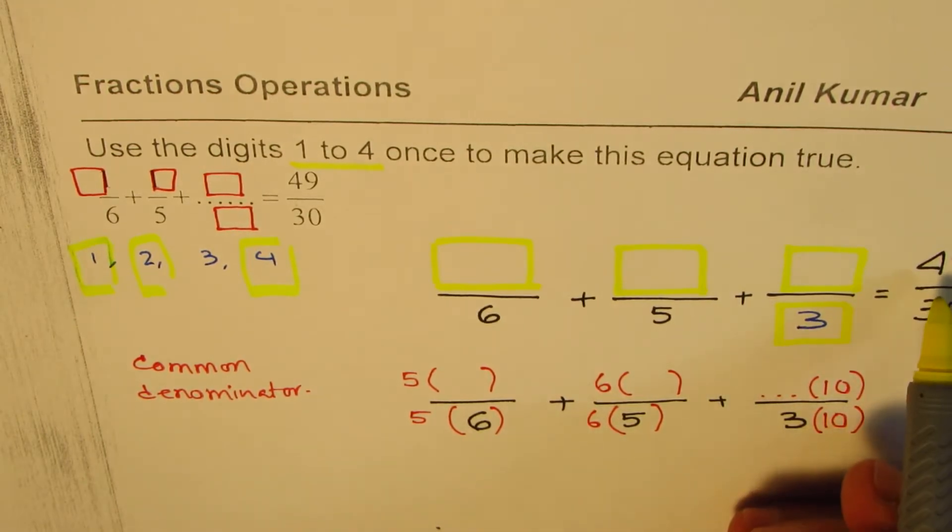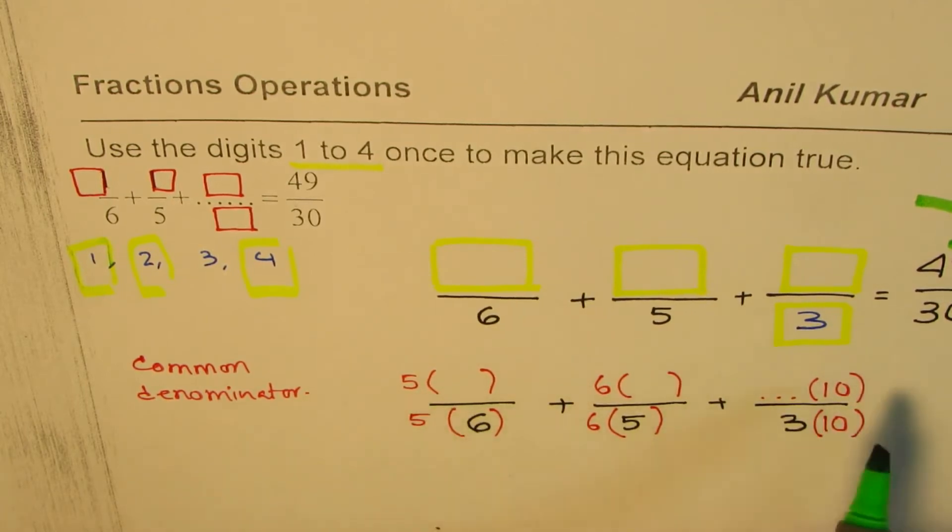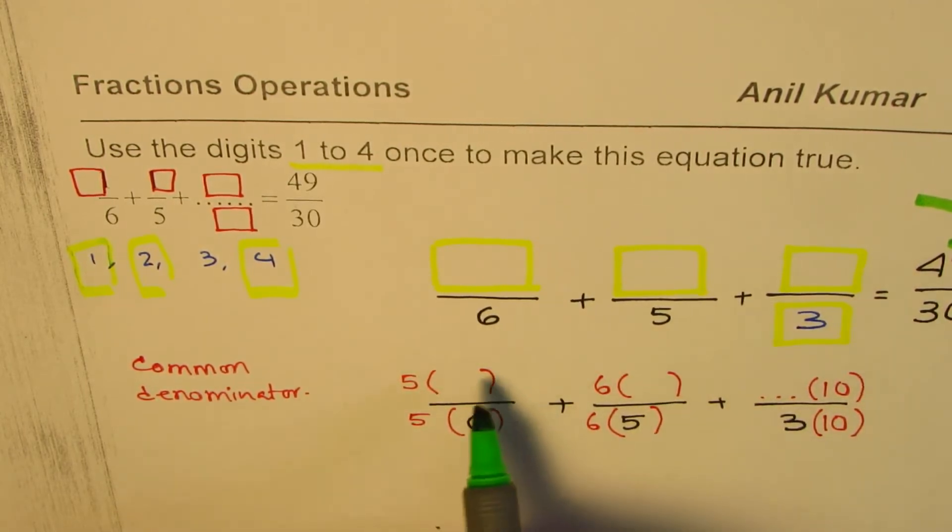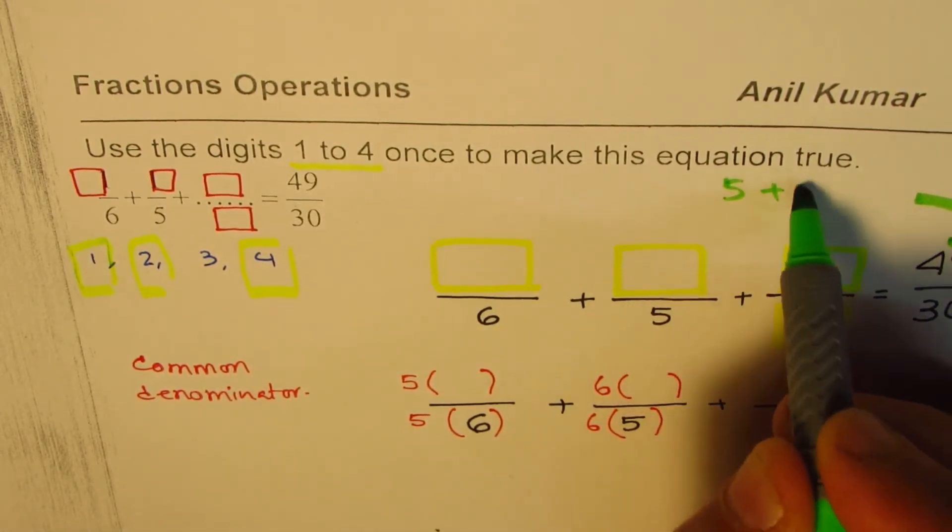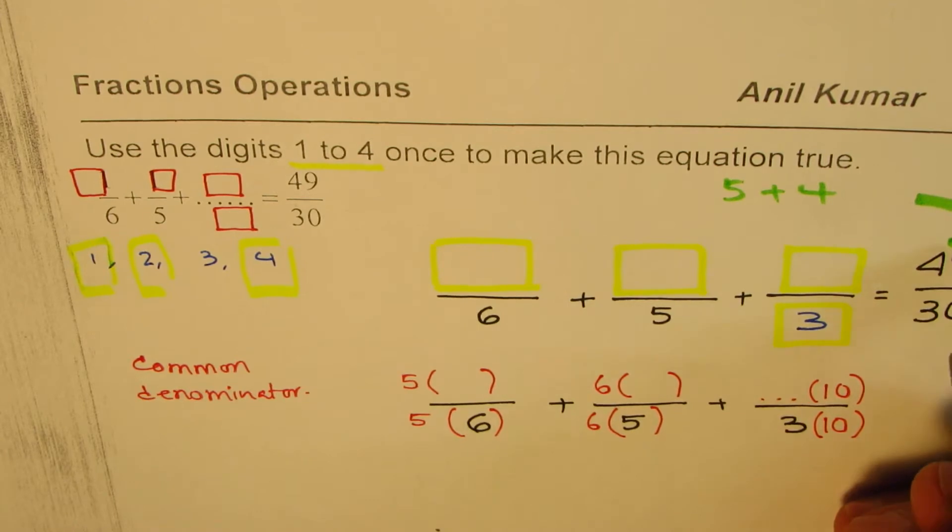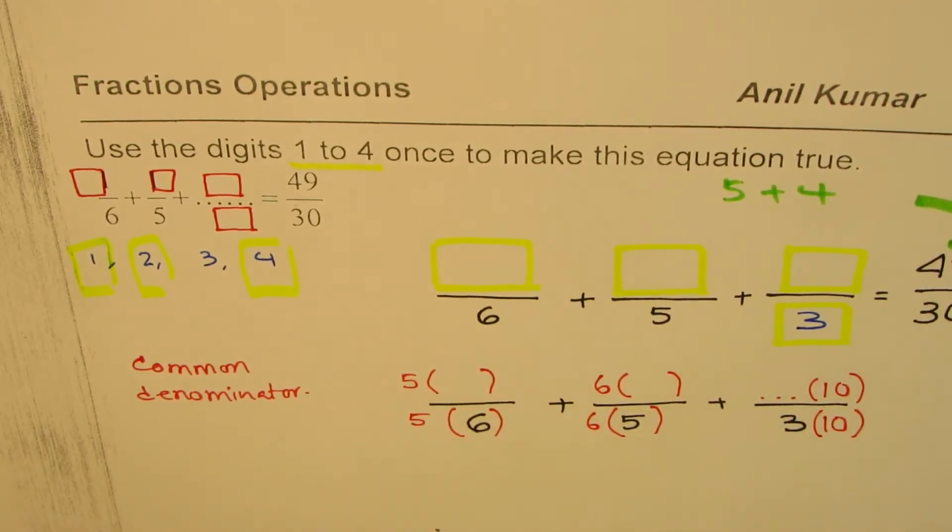Now it is simpler to understand what three numbers, which are now for us 1, 2, and 4, how should they be placed here so that we get 49. Now look at this part, 9. Let's look at 9. How do we get 9?